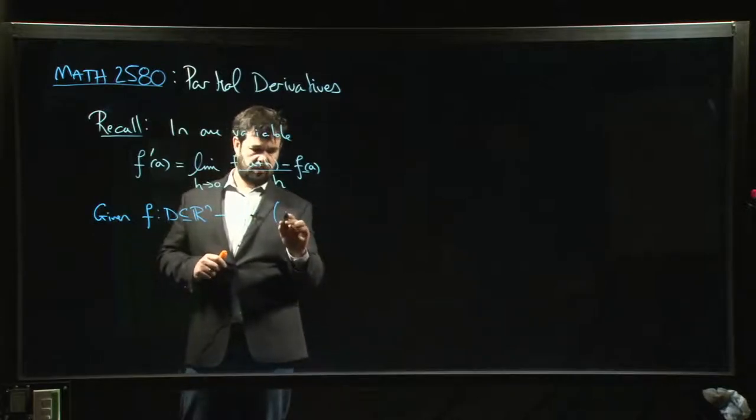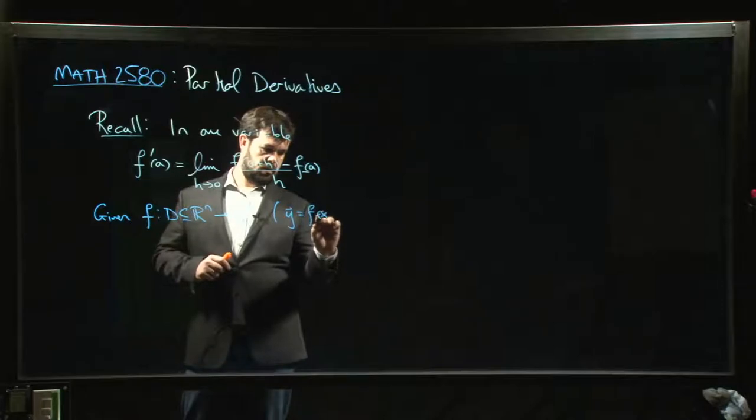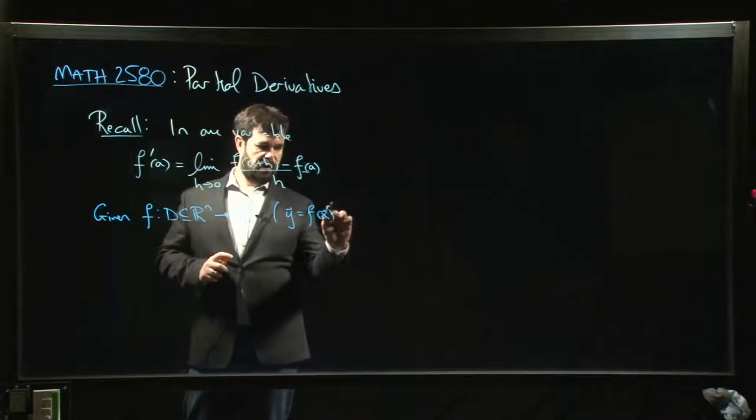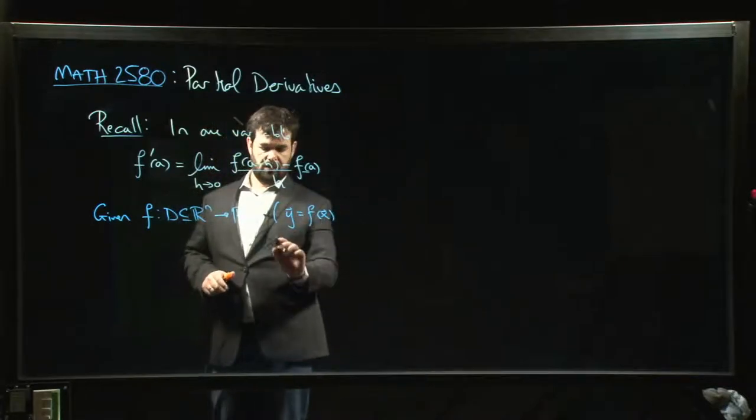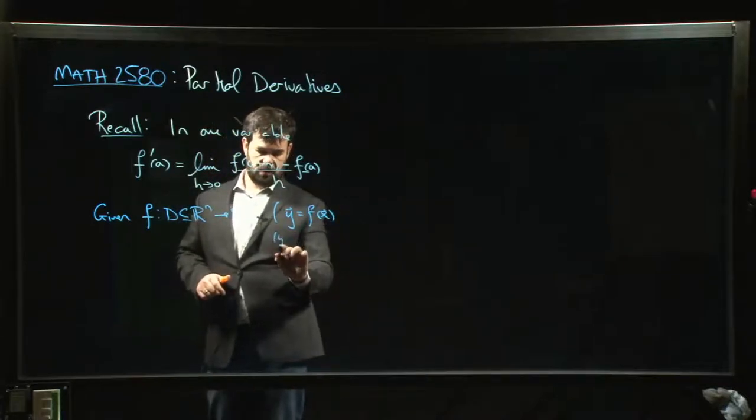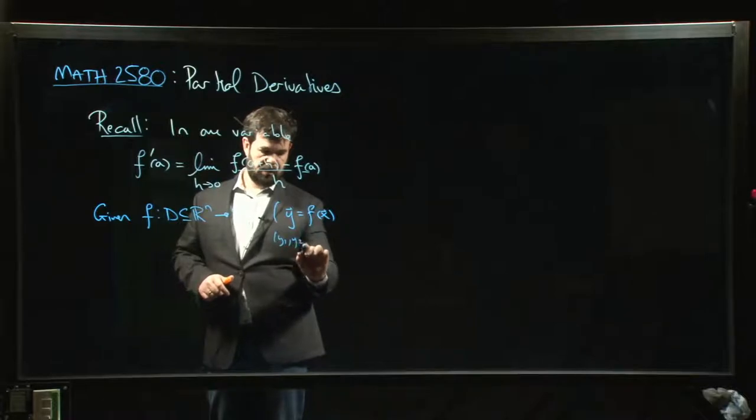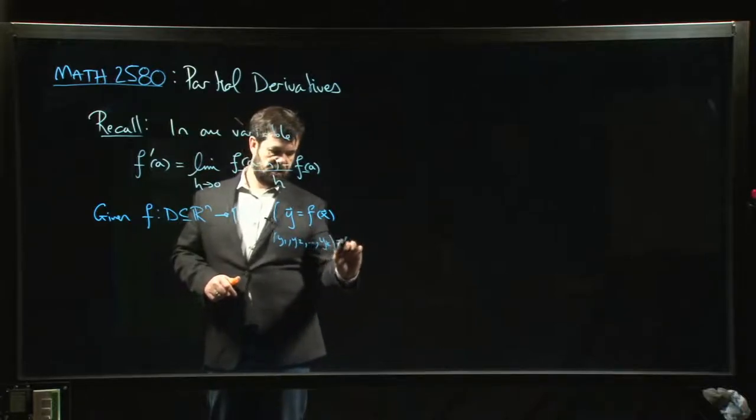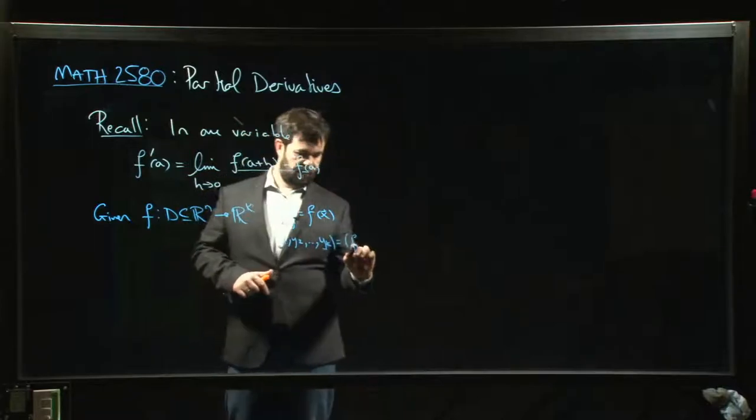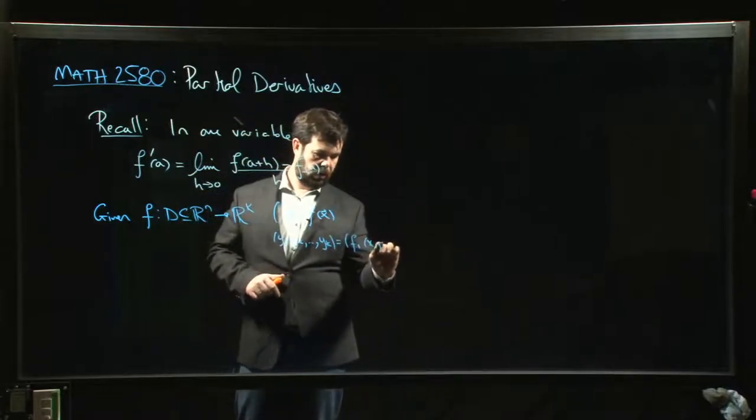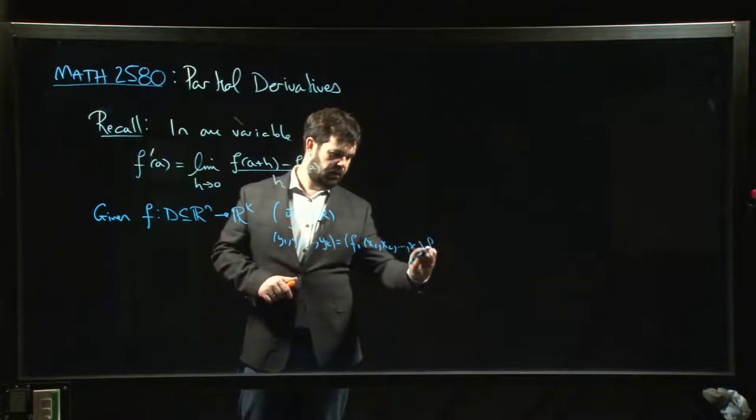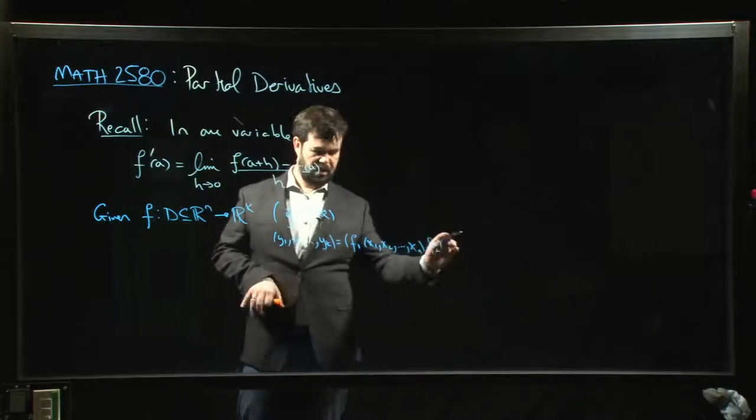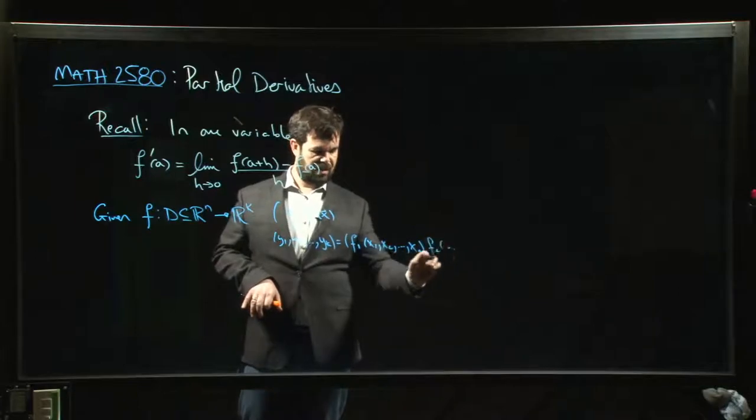And so we might say, let's say we write this vector notation that I mentioned, so we might say something like y equals f of x as shorthand. Now this is—and why do we write this?—because this is a lot easier than writing something like y1, y2 up to yk equals f1 of x1, x2 down to xn, f2. Okay, yeah, it's like I'm already tired of this.